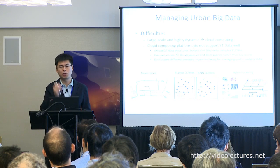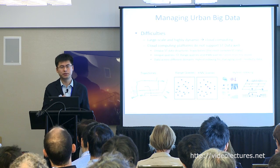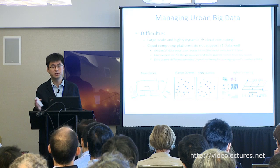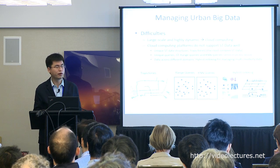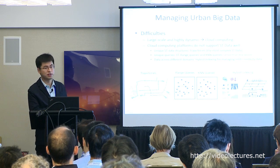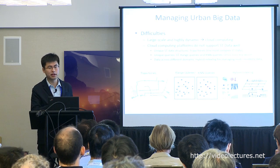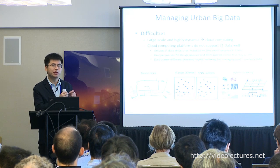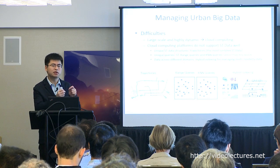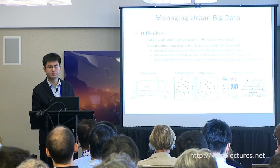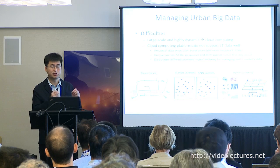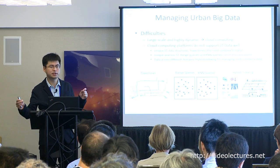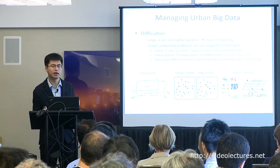First, the structure of spatial-temporal data is very different from text data and image data. Consider the trajectory: it is a sequence of time-stamped points, and the length of a trajectory keeps increasing as time goes by — it is not fixed.